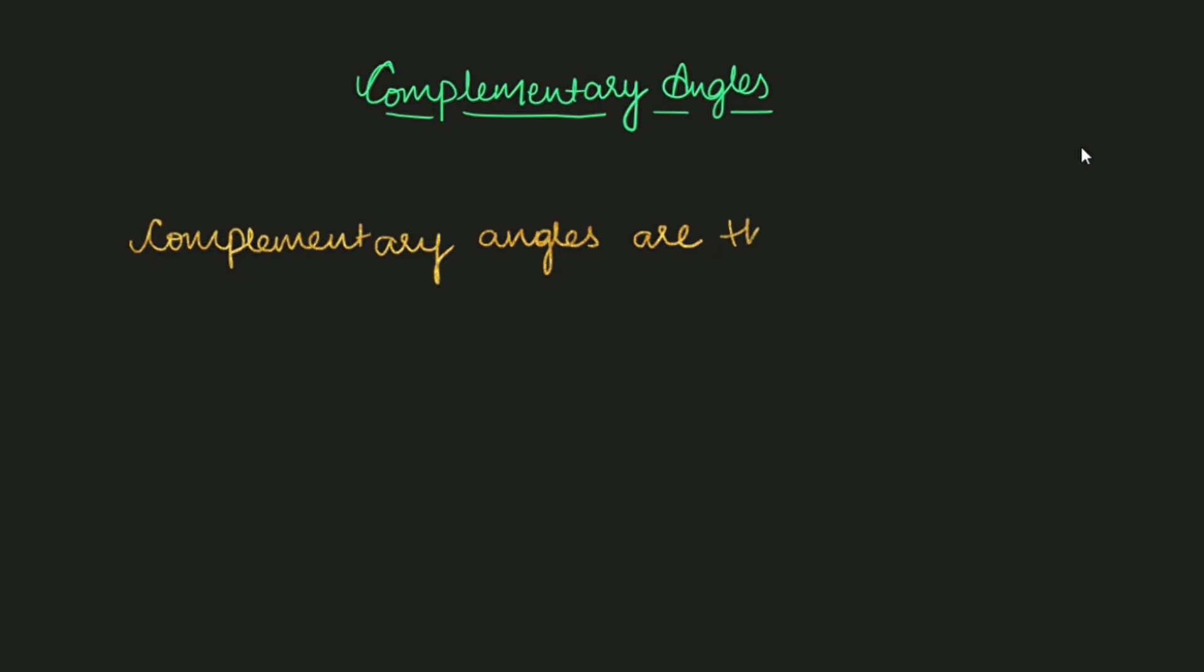Complementary angle me ek chiz yaad rakhni hai ki aise two angles jab unko hum add kareenge, to unka jo sum hai ya unka jo addition hai wo 90 degree aana chahiye. For example, angle A or angle B - so agar ye complementary angles hai,